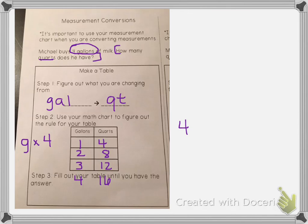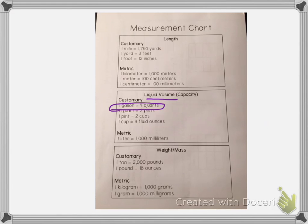So four gallons equals 16 quarts. When you set up your table, make sure that you put the right numbers under the right headings. We're going from gallons to quarts, so we had to look at our chart and make sure we paid attention that one gallon is four quarts, and this tells us the first row in our table.